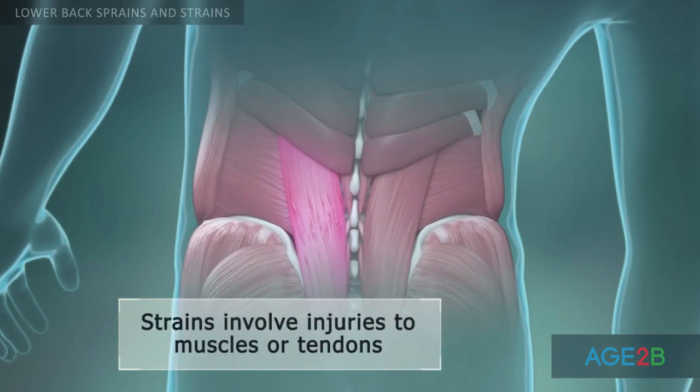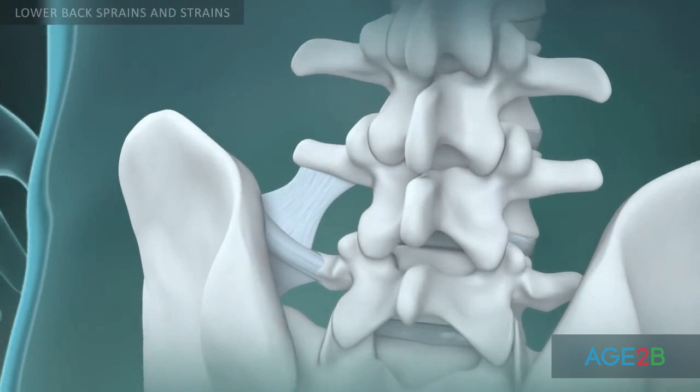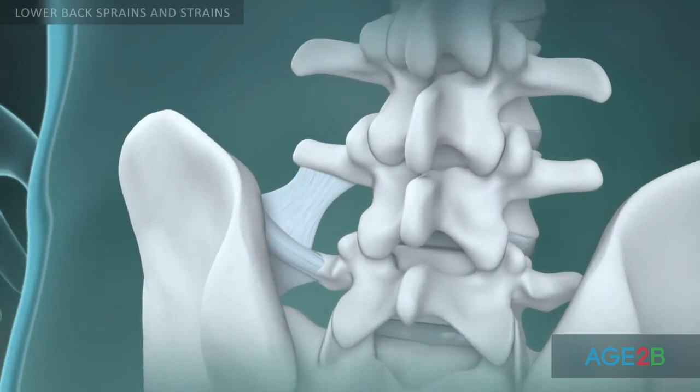Strains are also called pulled muscles. Spinal ligaments are strong fibrous bands that protect your vertebrae and keep them together. Low back sprains occur when ligaments are stretched or torn.